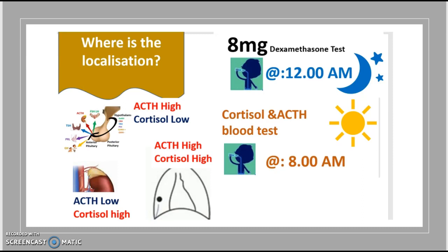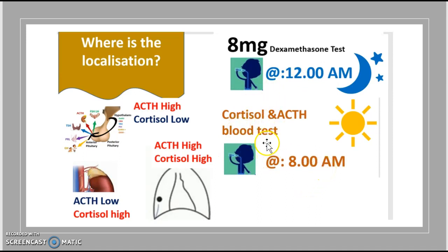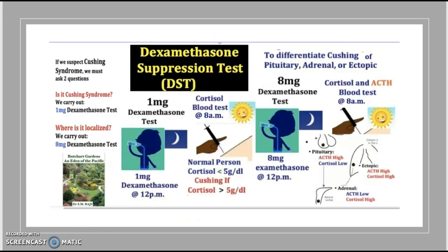Now that you've confirmed Cushing syndrome, you need to find the localization — either pituitary, ectopic, or adrenal. Give an 8 milligram dexamethasone test at 12 a.m., then check cortisol and ACTH at 8 a.m. the next morning. If ACTH is high and cortisol is low, it's likely pituitary. If both ACTH and cortisol are high, it's ectopic. If ACTH is low and cortisol is high, it's adrenal.